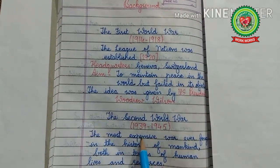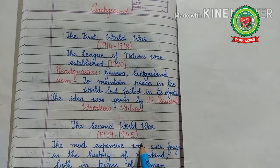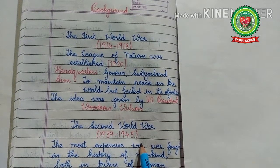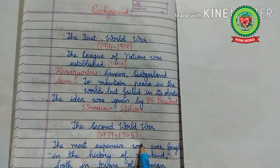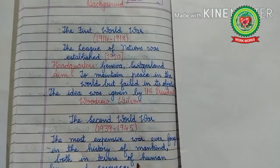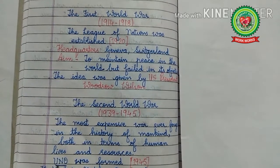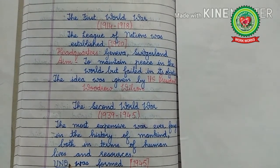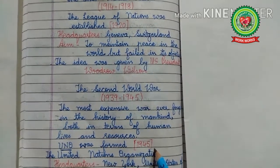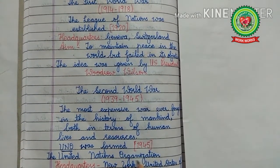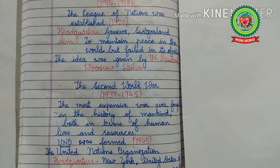The Second World War started in 1939 and ended in 1945. It was the most expensive war ever fought in the history of mankind, both in terms of human lives and resources. For the first time, atom bombs were used in this war. After the Second World War, a new organization was established — the UNO, the United Nations Organization — formed in 1945, with its headquarters in New York, United States of America.